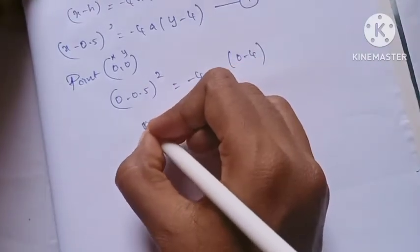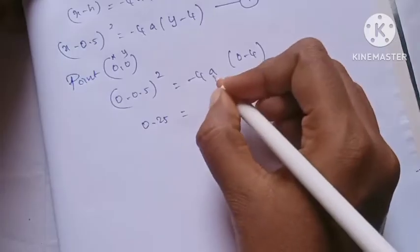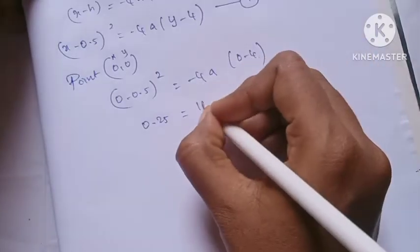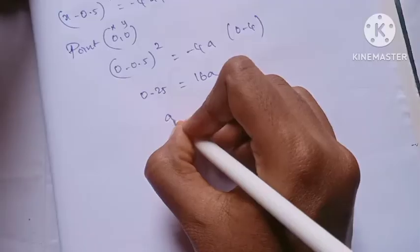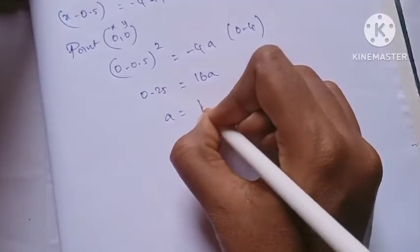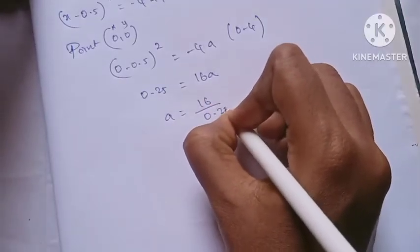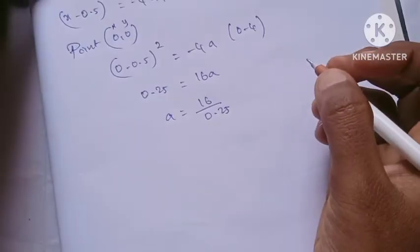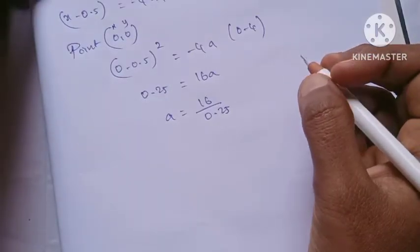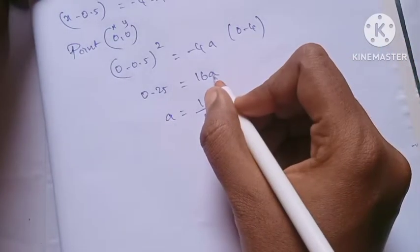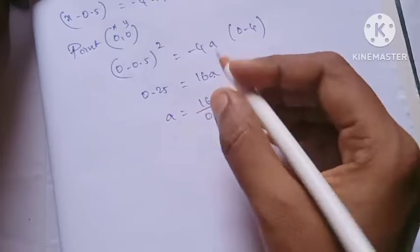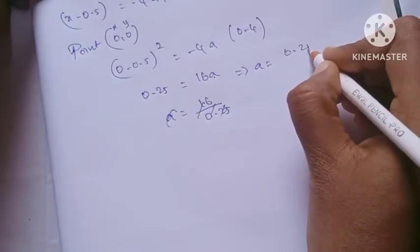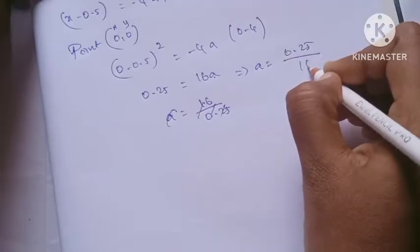0.5 whole square is 0.25. Minus into minus gives plus, and 4a into 4 is 16a. So 0.25 equals 16a, which means a is equal to 0.25 divided by 16.